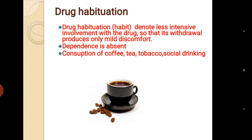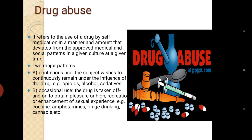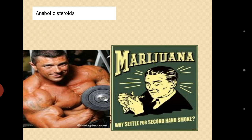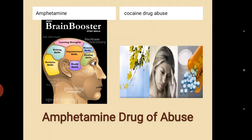Drug habituation: you feel like having it daily, but when you stop, you get only mild discomfort — you can stop it, and there are no withdrawal symptoms. Drug habituation denotes less intensive involvement; withdrawal produces only mild discomfort and dependence is absent. Examples: coffee, tea, tobacco, social drinking. Drug abuse: the patient takes drugs by self-medication, exceeding the normal therapeutic dose, deviating from approved medical and social patterns. Examples: anabolic steroids misused by weightlifters, amphetamines by students during exams, alcohol, smoking.